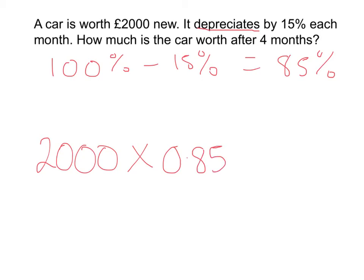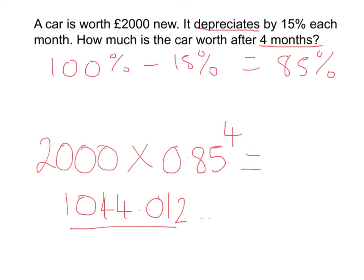We put that to the power of how many months this is happening for. The question tells us it's 4 months, so you put it to the power of 4. Type that into your calculator: 2,000 times 0.85 to the power of 4, and we get 1044.012. Always write your unrounded answer and then write a rounded version. This is in pounds, so I'm going to round it to the nearest penny. The answer is £1044.01.